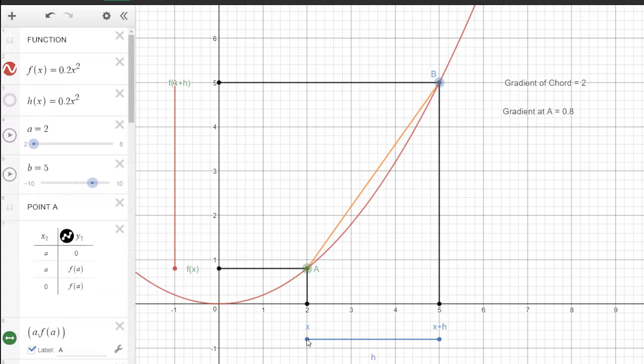I've then added on a certain distance, h, to get a point x plus h. So the x-coordinate of B is x plus h, and the y-coordinate of B is f of x plus h.